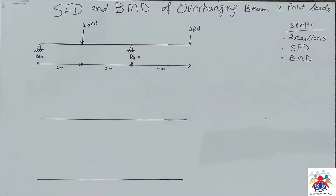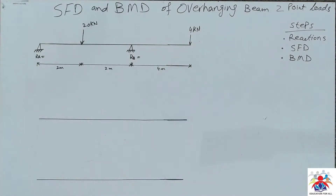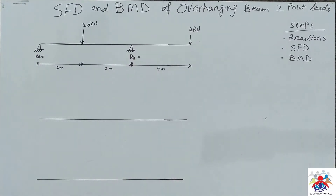Hello and welcome to my YouTube channel. In this video I am going to explain how to draw shear force and bending moment diagram of an overhanging beam with two point loads acting downwards. We have three steps to follow. As you can see in the diagram, we have a beam with two point loads — one at the overhanging part and one in the middle of the beam.